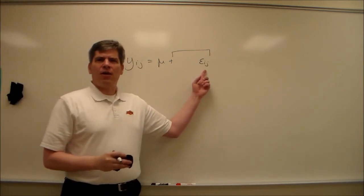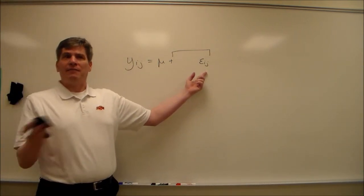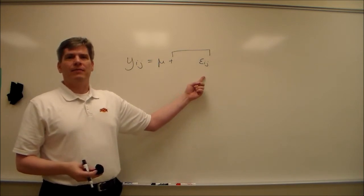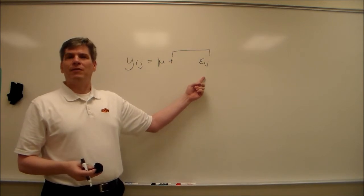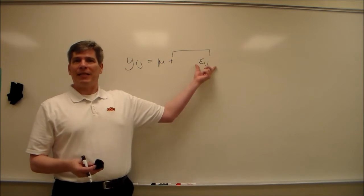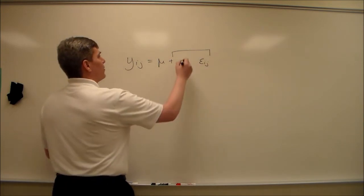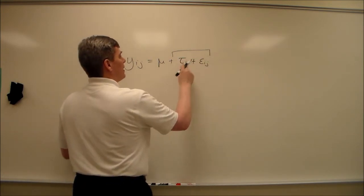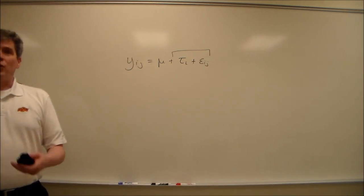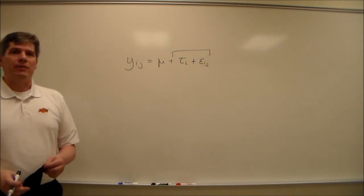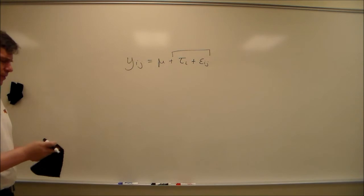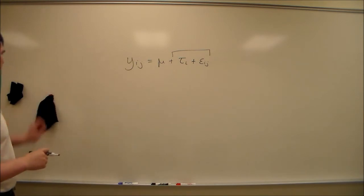And this epsilon is always the unexplained variation. From a few lectures ago we want to make sure that this gets as small as we can make it, because that makes the test more powerful. So if we can break up or partition this unexplained variance into some explained variance, and then what's left over, we're actually making our test more powerful. So that's the reason why we include random effects at times.